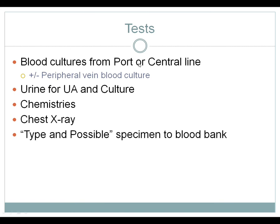If the blood culture from the line is positive but the peripheral vein is not, that suggests either contamination or that the line itself is the source. Obtain urine for urinalysis and culture — importantly, patients with neutropenic fever and a positive urine culture will most often show hematuria, but not necessarily positive leukocyte esterase or nitrite. Also check chemistries to assess renal perfusion, get a chest x-ray to look for pneumonia, and send a type and screen, as these patients often have multiple cell line abnormalities and may need transfusion.